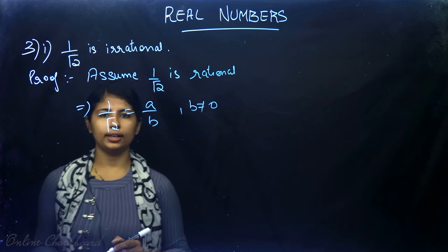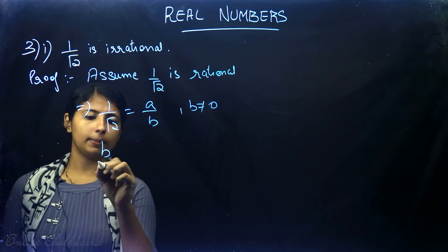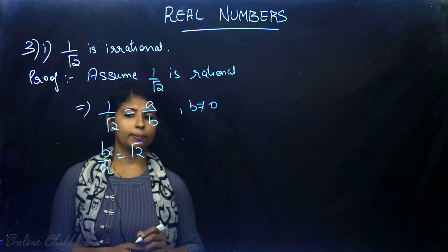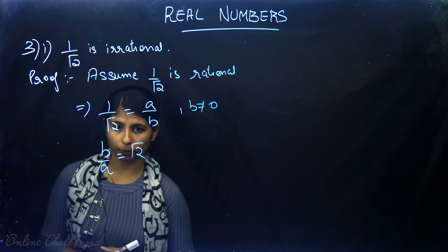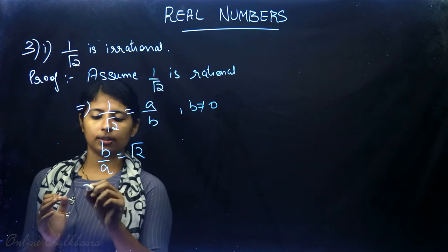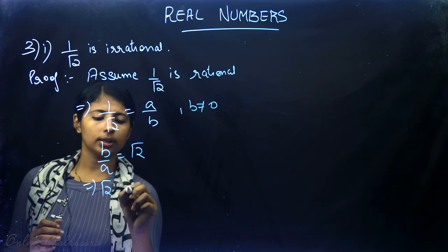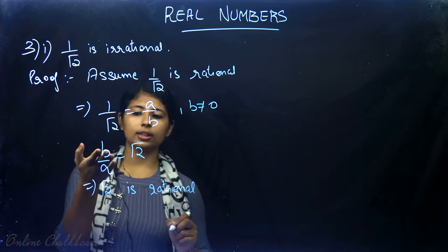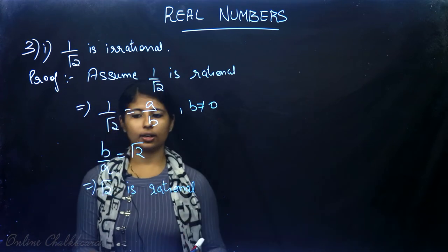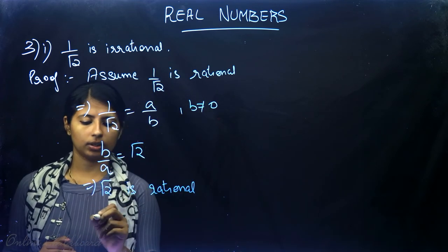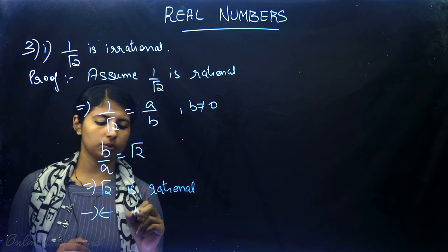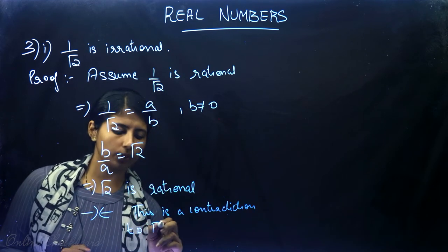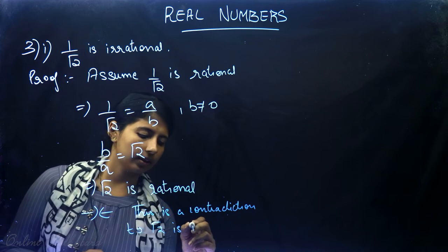Cross multiplying: b/a = √2. So we got that √2 is rational, because √2 could be written in the form b/a. This is a contradiction to the fact that √2 is irrational.